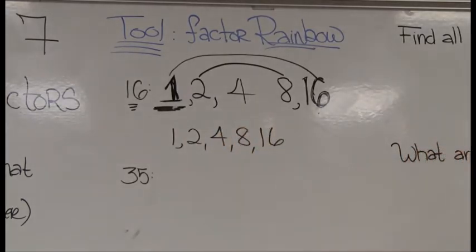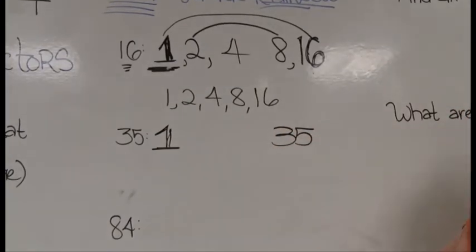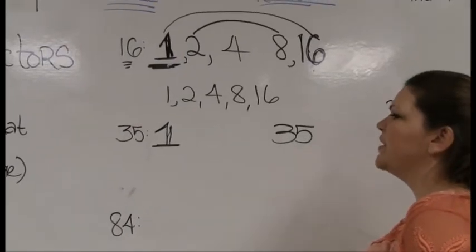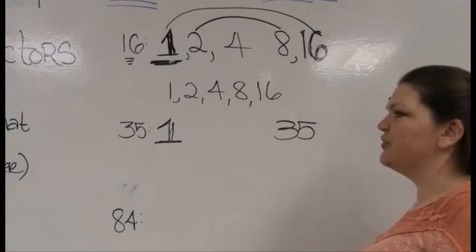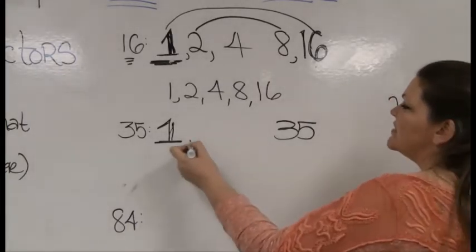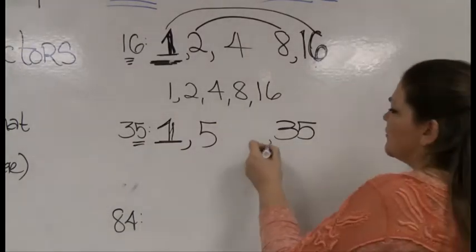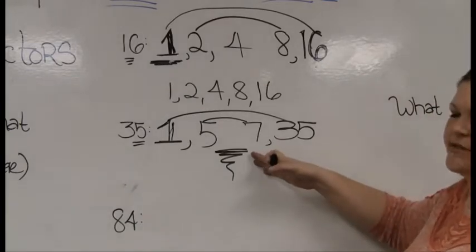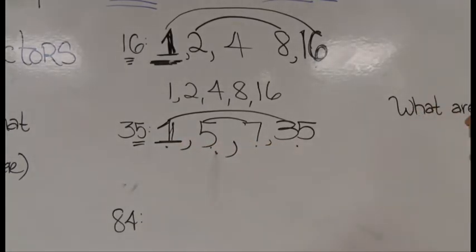Let's try another one — let's go for 35. Always start with 1, always end with the number itself. Does 35 divide by 2? No, it's an odd number. Divide by 3? No, its sum of digits is 8. Divide by 4? That's a silly question — if it didn't divide by 2, it won't divide by any even number. Next number 5: does 35 divide by 5? Indeed it does — it ends in a 5. 5 times 7 is 35. There's only one number between 5 and 7, which is 6, and 35 doesn't divide by 6. My four factors are 1, 5, 7, and 35.